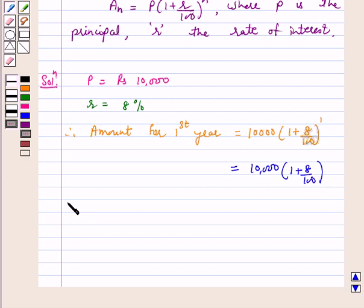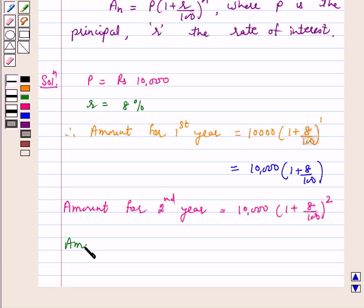Again, amount for second year is 10,000 times (1 + 8/100) raised to power 2. Similarly, amount for third year is 10,000 times (1 + 8/100) raised to power 3.